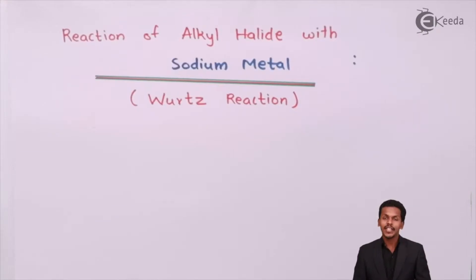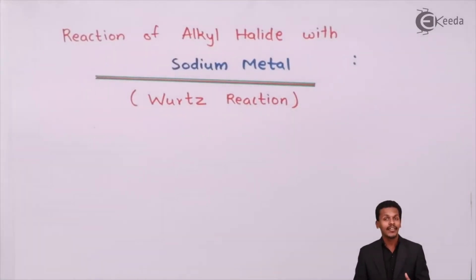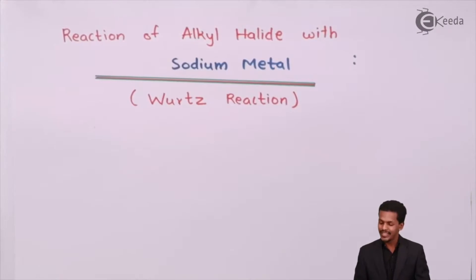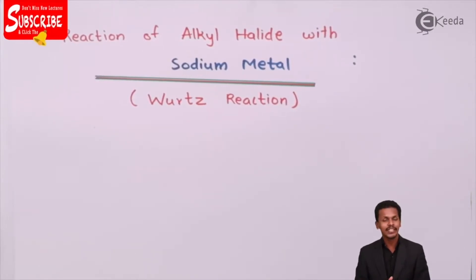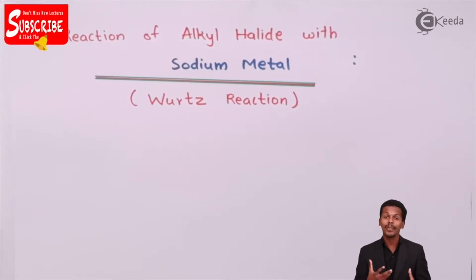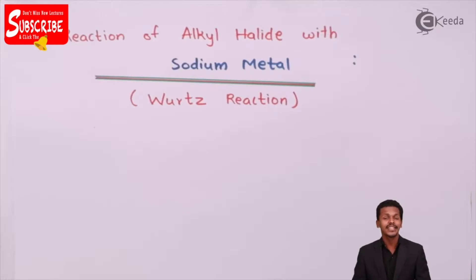The Wurtz reaction is nothing but the reaction of alkyl halide with sodium metal. Let us understand how the reaction takes place in such a manner that we could obtain higher alkanes. So let us understand the general reaction first.